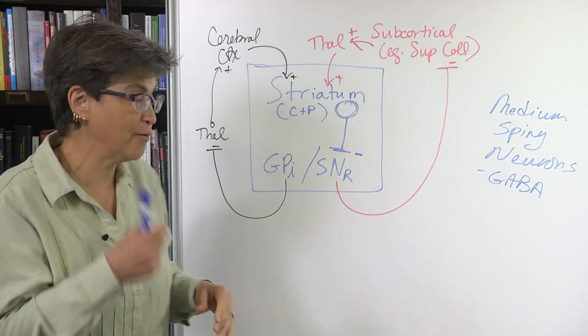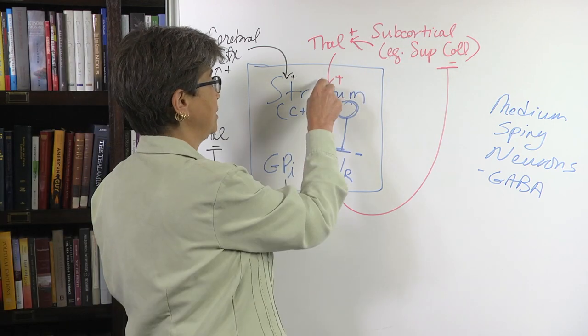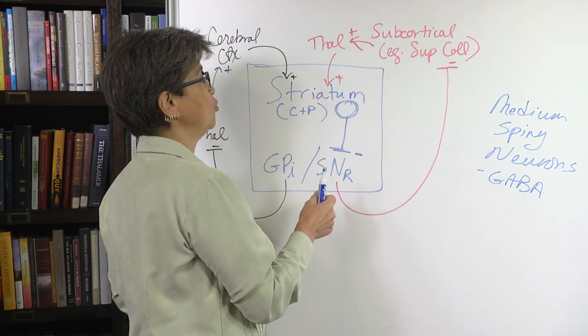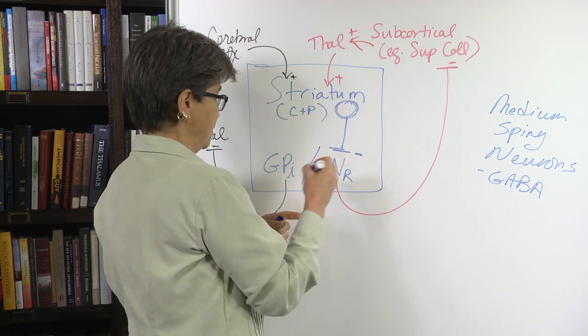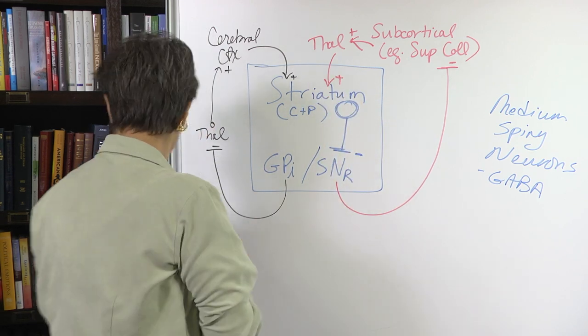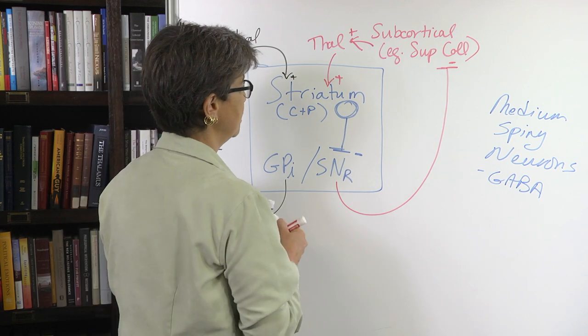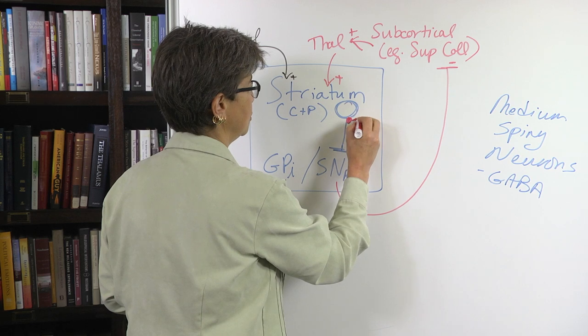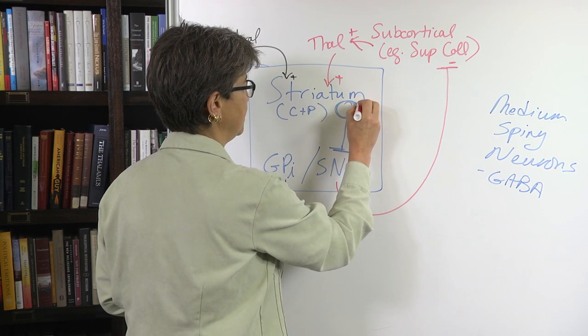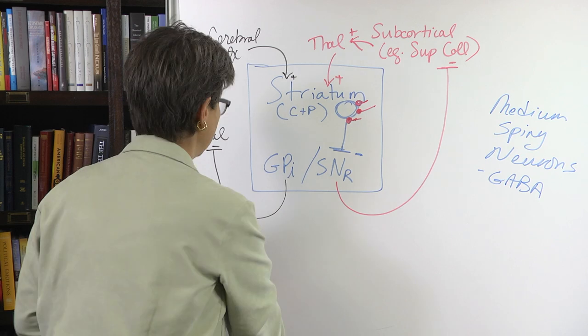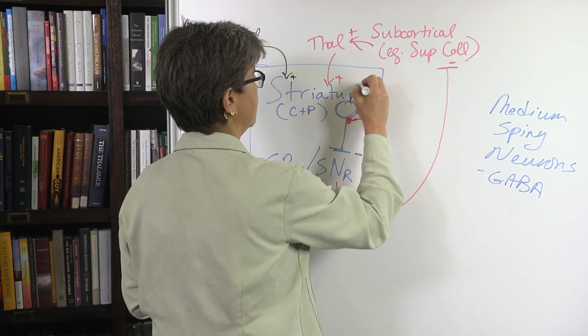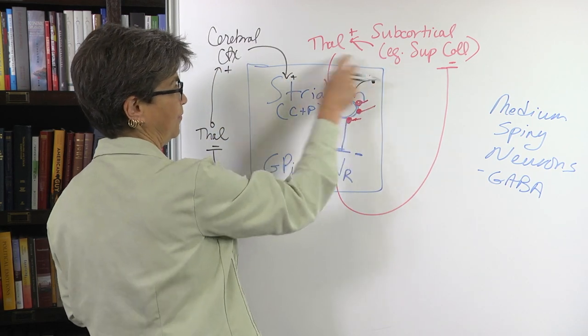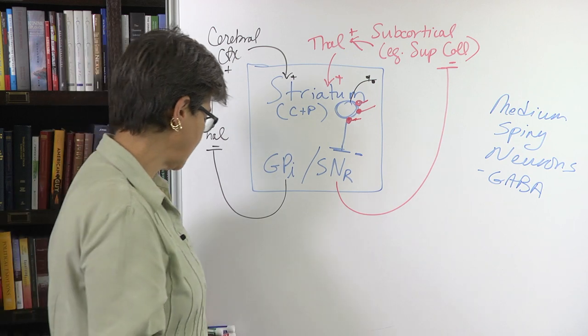One of the major reasons that is true is that the input that arises originally from subcortical input, this red input, ends very proximally on the cell. It's going to end here, whereas the cortical input ends on the dendrites. So this has a bigger effect.